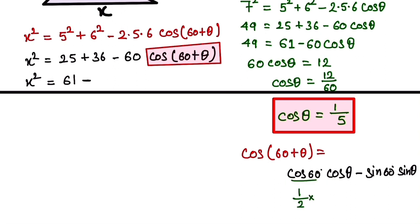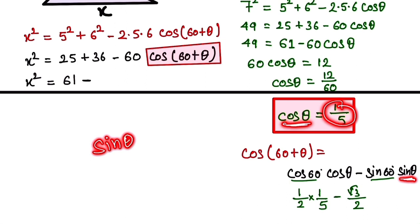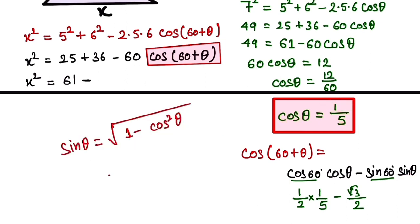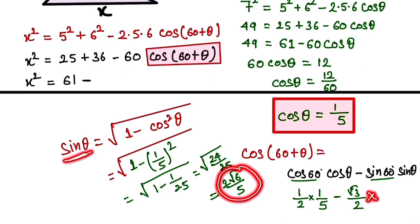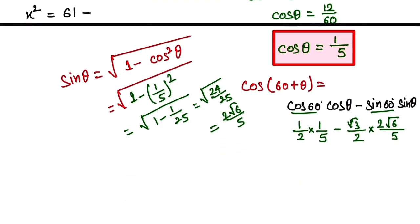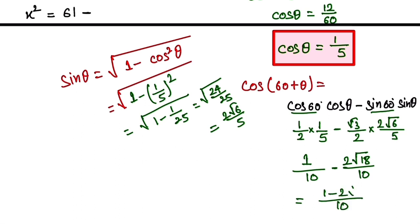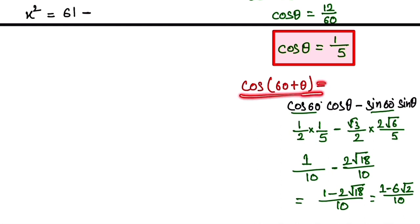So, cos 60 = 1/2, and cos θ = 1/5, giving us 1/2 · 1/5 = 1/10. Minus sin 60 = √3/2, multiplied by sin θ. We find sin θ = √(1 − cos²θ) = √(1 − 1/25) = √(24/25) = 2√6/5. So, sin 60 · sin θ = (√3/2)·(2√6/5) = 2√18/10. Therefore, cos(60 + θ) = 1/10 − 2√18/10 = (1 − 2√18)/10, which simplifies to (1 − 6√2)/10.